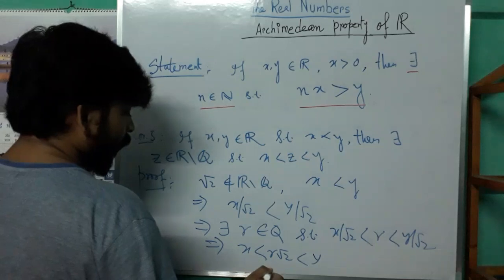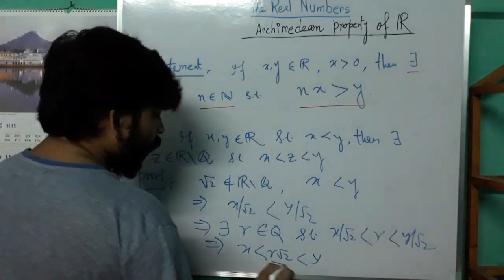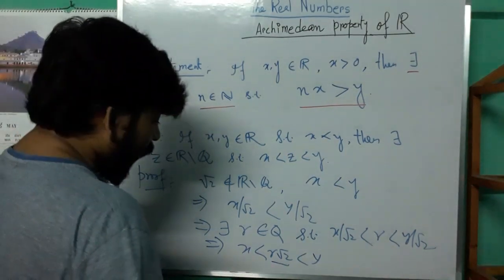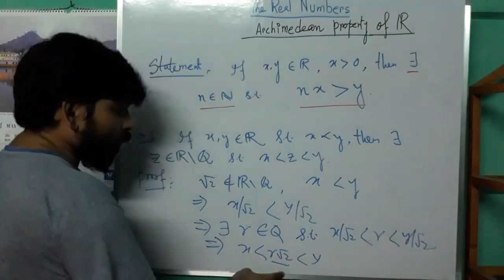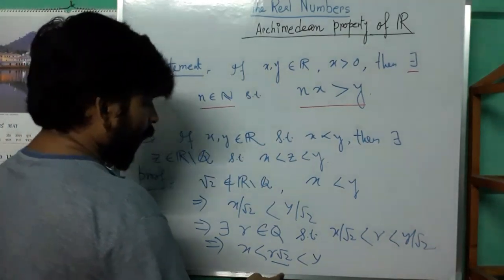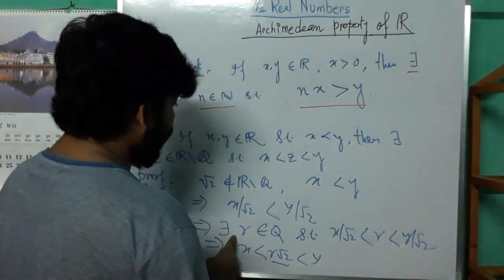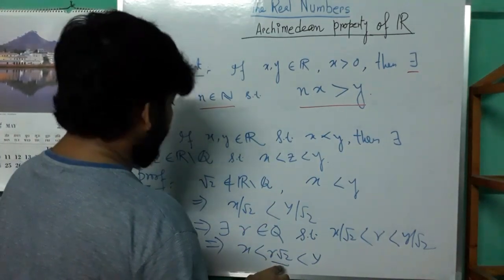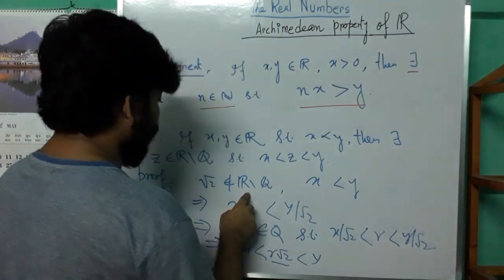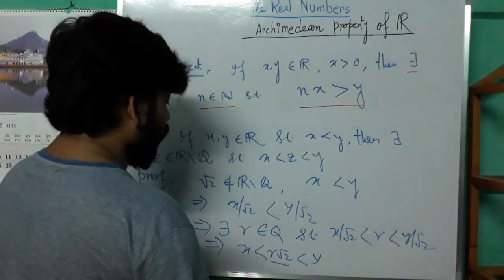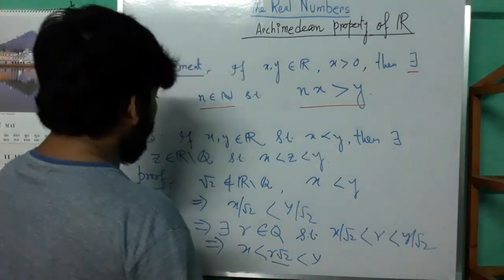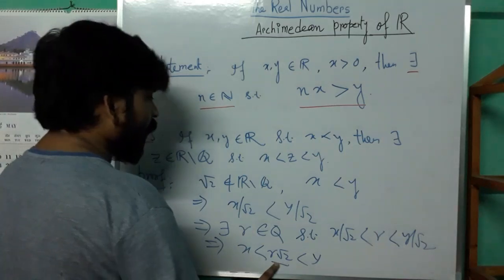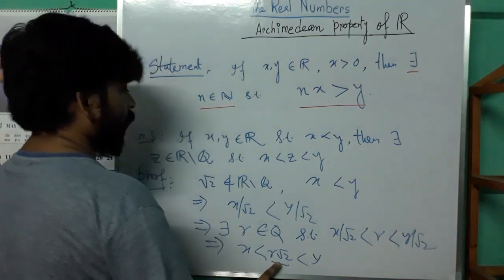Our claim is that r√2 is irrational. If r√2 were rational, then since r is rational, we could show that √2 is rational — but we know √2 is irrational. So r√2 must be irrational. Thus between two real numbers there exists an irrational number.